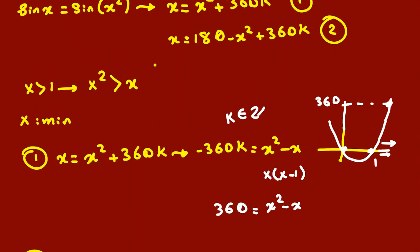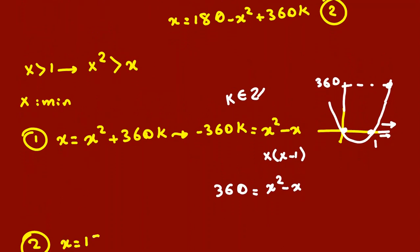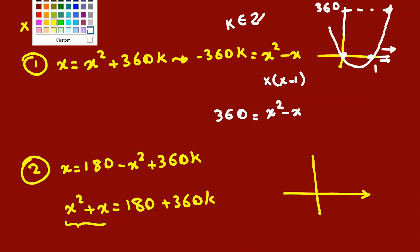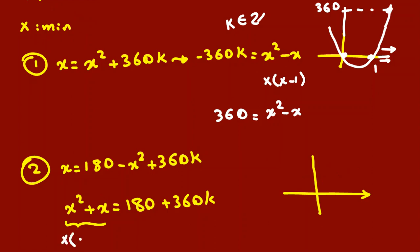Now let's analyze the second one. x equals 180 minus x² plus 360k. If I take x² to the left-hand side, it will be x² plus x equals 180 plus 360k. If I draw the left-hand side diagram, it's x times (x plus 1). The roots are 0 and negative 1. The coefficient here is 1, so it opens up.